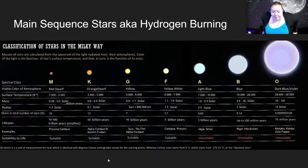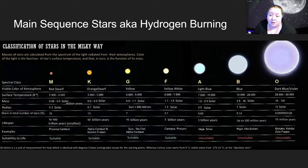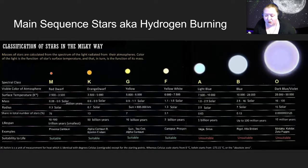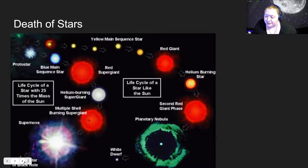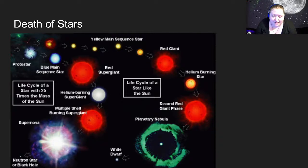So we have our main-sequence star sitting there burning hydrogen into helium for about 90% of its lifetime, and we see how that lifetime varies depending on how massive the star is. What happens at the end of its life? It turns out that different things happen depending on how massive that star is.